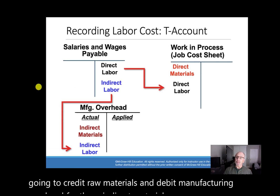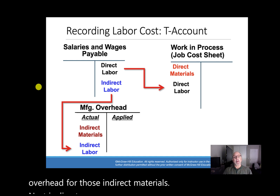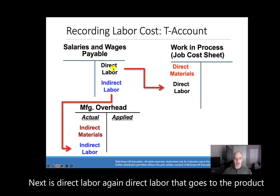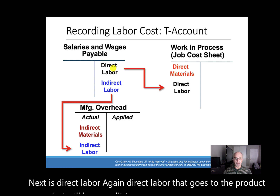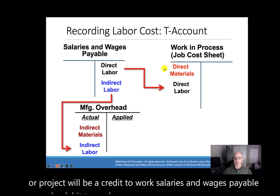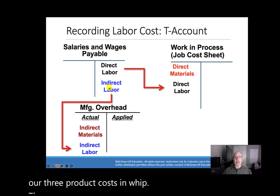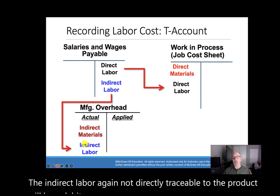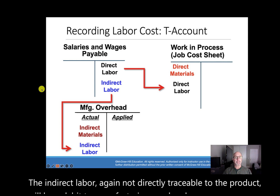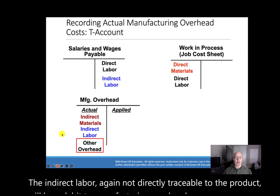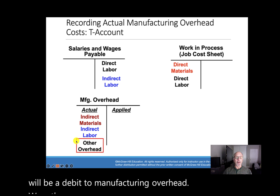Next is direct labor. Direct labor that goes to the product or project will be a credit to salaries and wages payable and a debit to work in process — so we now have two of our three product costs in WIP. Indirect labor, not directly traceable to the product, will be a debit to manufacturing overhead.